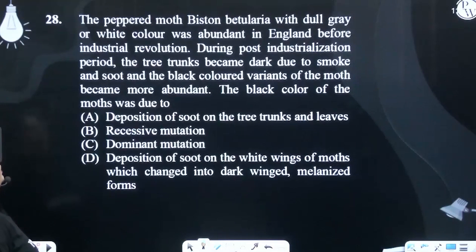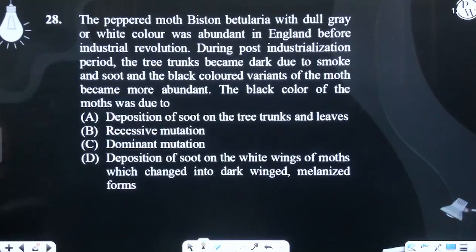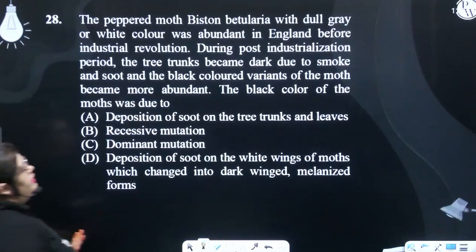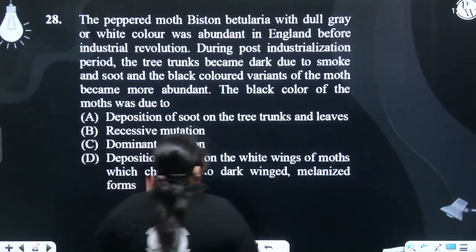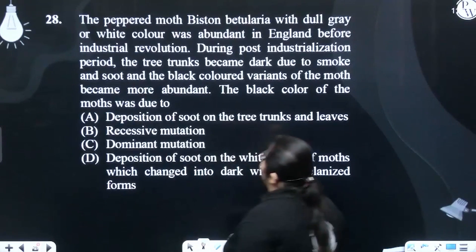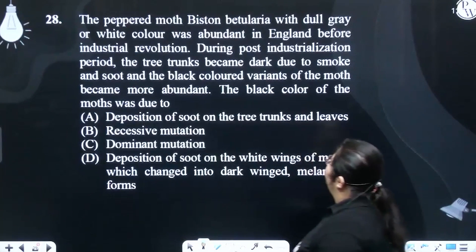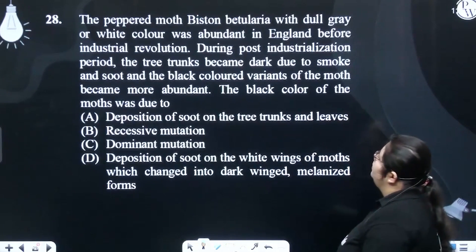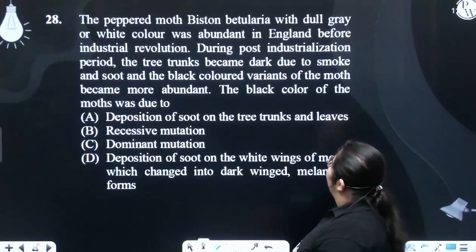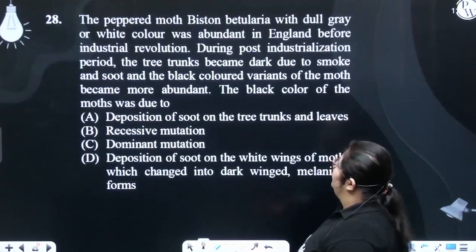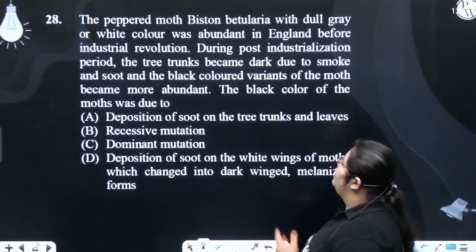The peppered moth, Biston betularia, with dull gray or white color was abundant in England before the industrial revolution. In the post-industrialization period, the tree trunks became dark due to smoke and soot, and the black-colored variant of the moth became more abundant.